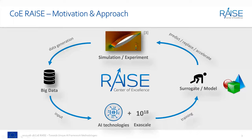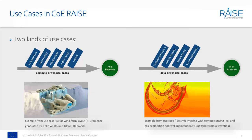We're thinking about what frameworks like HEAT, TensorFlow, PyTorch, and others can do. RACE wants to pick some of them to create something like a unique AI framework methodology, though not all use cases have the same requirements. We're looking at the different use cases to understand those different requirements in terms of data generation, AI modeling, and how to scale up codes together with AI modeling.